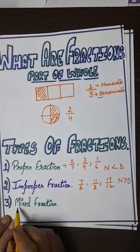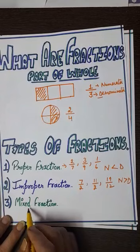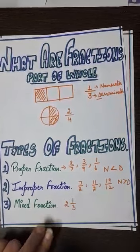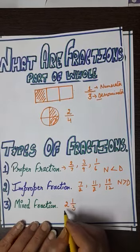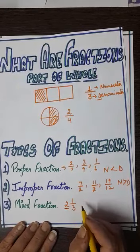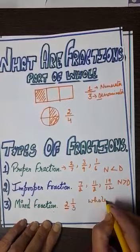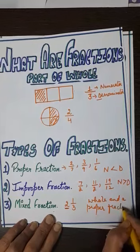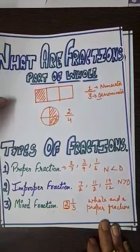The third type is mixed fraction. As the name suggests, it is written in a mixed form. For example, 2 and 1 by 3 — you can clearly see it is mixed. Here, 2 is the whole part and 1 by 3 is a proper fraction. So a mixed fraction is the combination of a whole number and a proper fraction.